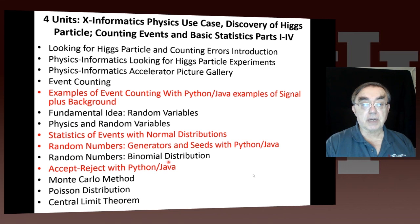After that side MOOC, we return to the actual core intellectual part of the course, and we do X-informatics physics. In particular, how we discover the Higgs particle and all the issues involved in counting lots of events and the statistics involved with them. We look at the experiments, then we have a picture gallery of accelerators. We discuss event counting in detail and give some examples with Python and Java. Python is particularly good for these types of examples because of its nice graphics. We look at signal and background issues.